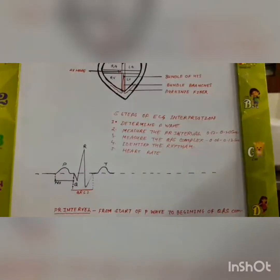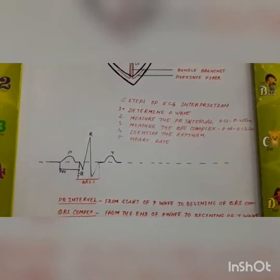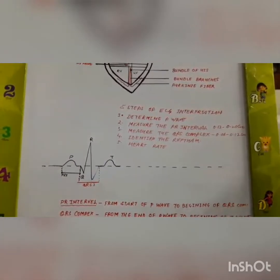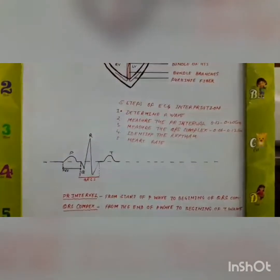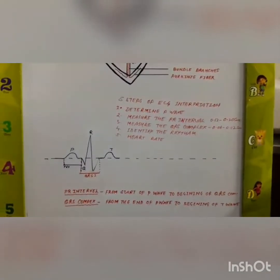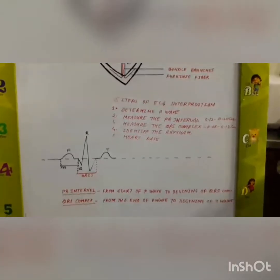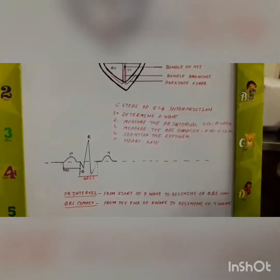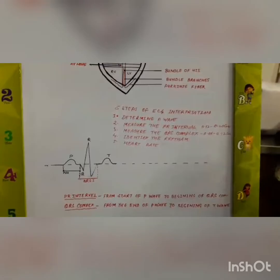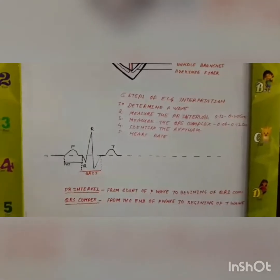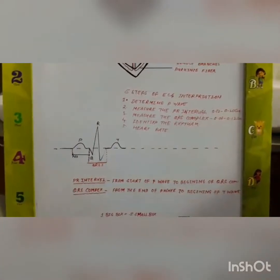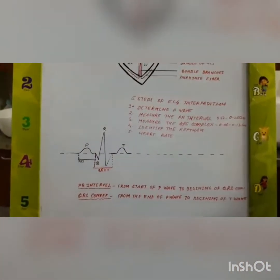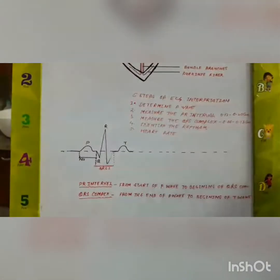Now, how to interpret an EKG in five steps. Step one: determination of the P wave. In every EKG, we should first see whether the P wave is present or not. Generally, the P wave is upright in a normal EKG. But in some cases, the P wave is flat or biphasic. If the P wave is flat or biphasic, it represents atrial enlargement.